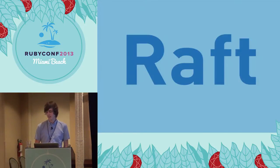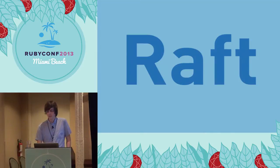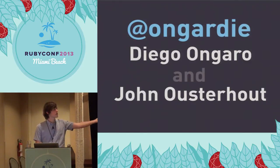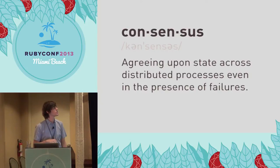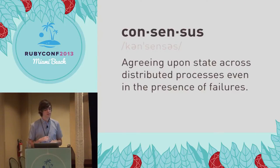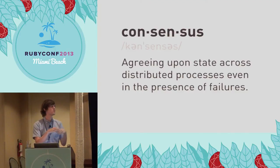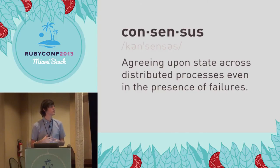So let's get into Raft, which is a consensus protocol. It was written by Diego Ongaro and John Ousterhout — they both work at Stanford and wrote the paper together. Diego's a super nice guy; you should ping him on Twitter if you have any questions. Before we do some really in-depth stuff, consensus is really just agreeing upon a value across distributed processes, even in the presence of failure. We have a bunch of servers and we want them to agree on a certain decision or value, and be able to do that without all the servers having to be up.